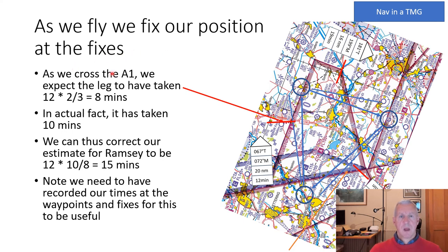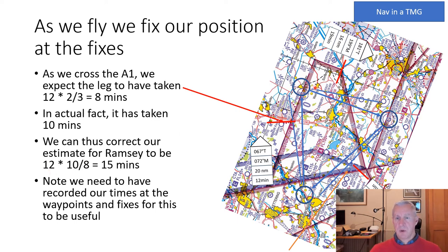Here's an example. Flying the leg from Ramsey to Rushton, as we cross the A1 — about two-thirds of the way along — we expect that to have taken two-thirds of 12 minutes, so 8 minutes. If it actually takes 10 minutes, we're 2 minutes over time. We can then correct our estimate for Ramsey: 12 minutes times 10 over 8 gives 15 minutes.